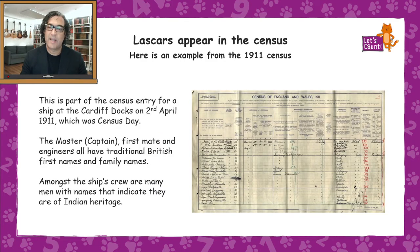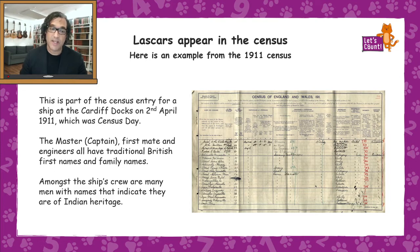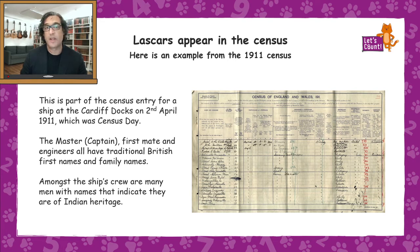Here's an example of the Lascars appearing in the census of 1911 — 110 years ago. This document is part of the census entry for a ship at Cardiff Docks on the 2nd of April 1911, which was census day that year. The master, first mate, and engineers on board all have traditional British family names and first names, while among the ship's crew are many men with names indicating they are of Indian heritage.